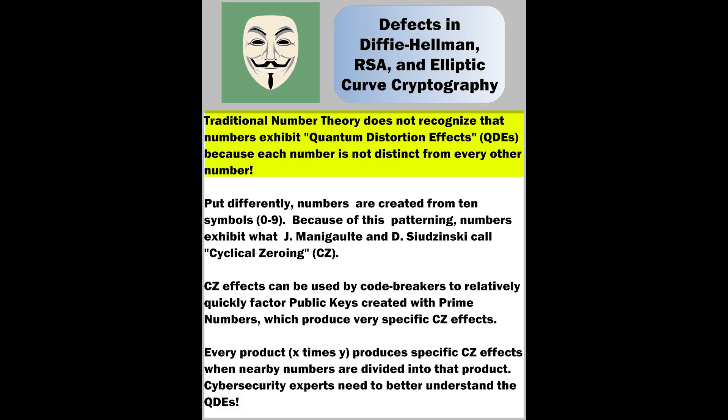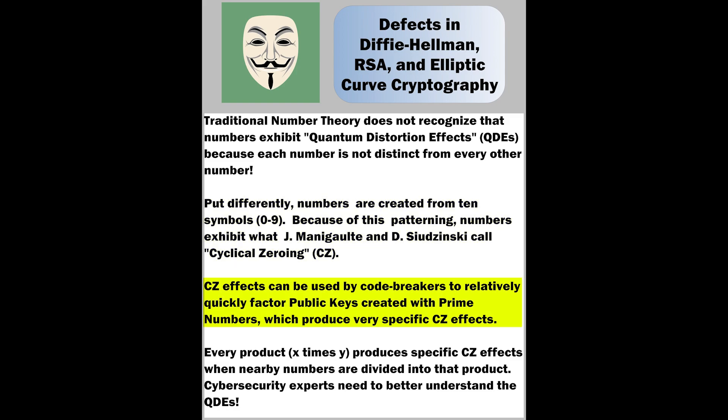Traditional number theory does not recognize that numbers exhibit quantum distortion effects, because each number is not distinct from every other number. Put differently, numbers are created from ten symbols, zero through nine. Because of this patterning, numbers exhibit what J. Manigault and D. Shujinsky call cyclical zeroing. CZ effects can be used by code breakers to relatively quickly factor public keys created with prime numbers, which produce very specific CZ effects.